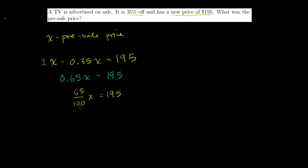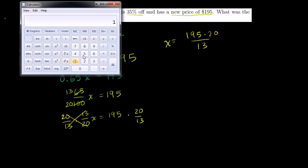Now we can multiply both sides of this equation by the inverse. Actually, even before I do that, let me simplify this fraction. I can divide the numerator and the denominator by 5. And this becomes 13 over 20. So we get 13 over 20x is equal to 195. And now we can multiply both sides by the inverse of this. So 20 over 13 times that is equal to 195 times 20 over 13. These cancel out. And we get x is equal to 195 times 20 over 13, which we could figure out, but I'll take the calculator out for this one.